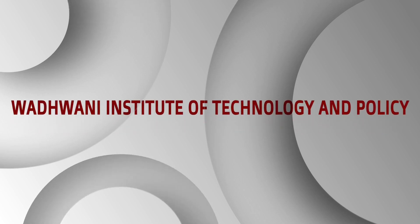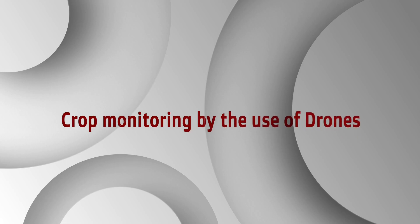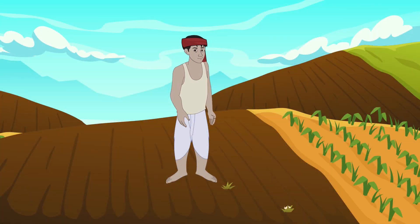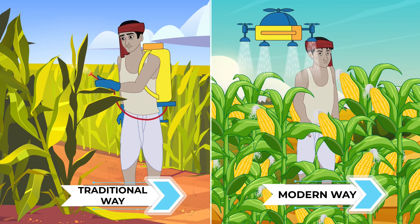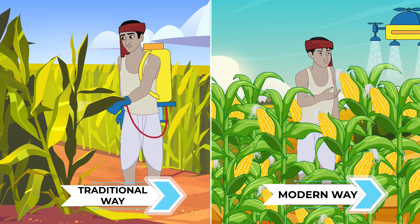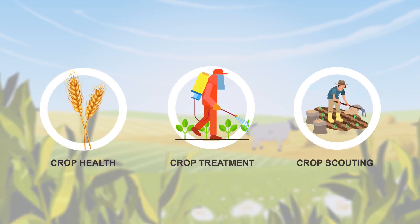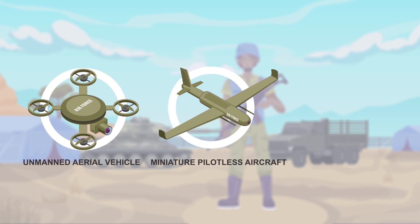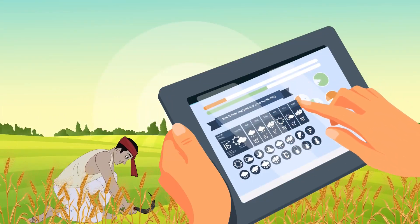Welcome to the Wadwani Institute of Technology and Policy video case study series. Today we present crop monitoring by the use of drones. Regular monitoring of crops is done by farmers to detect potential threats such as diseases, pests, and slow growth rates. Traditional forms of monitoring were visual inspection and collecting ground samples manually. Drone technology is a great way to regulate crop health, crop treatment, and crop scouting in a scientific and process-driven method. Initially developed as a military tool, drones were known as unmanned aerial vehicles (UAV), miniature pilotless aircraft, or flying mini robots. Today they are used in soil and field analysis and crop monitoring in agriculture.